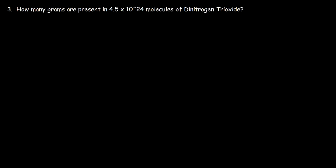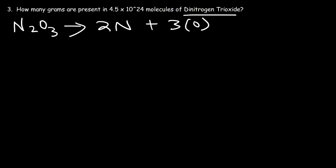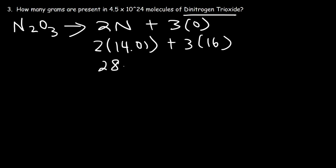Number 3: how many grams are present in 4.5 times 10 to the 24 molecules of dinitrogen trioxide? This problem is the reverse — we're given the number of molecules and need to convert to mass in grams. Dinitrogen trioxide is N2O3: 'di' means 2, 'tri' means 3, so we have two nitrogen atoms and three oxygen atoms. The atomic mass of N is 14.01 and O is 16, giving 28.02 plus 48, which totals 76.02 grams per mole.